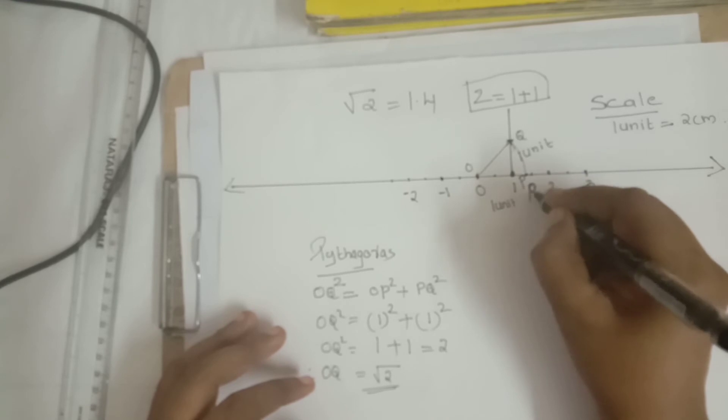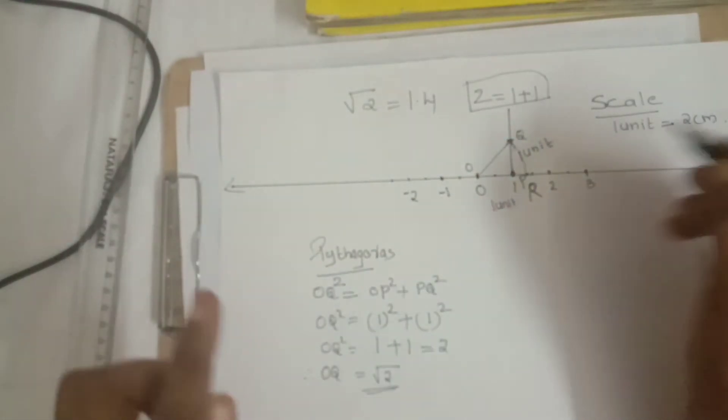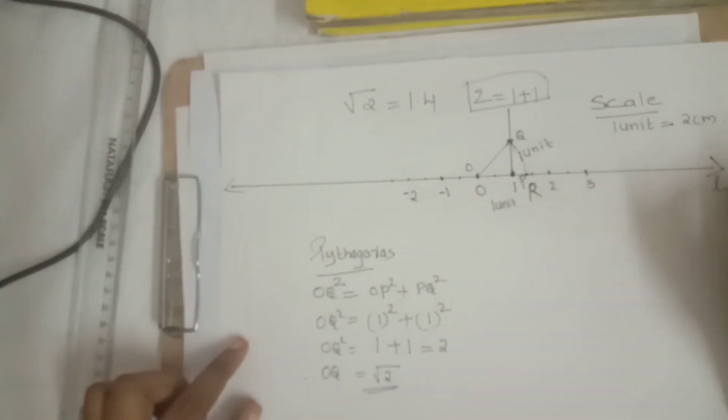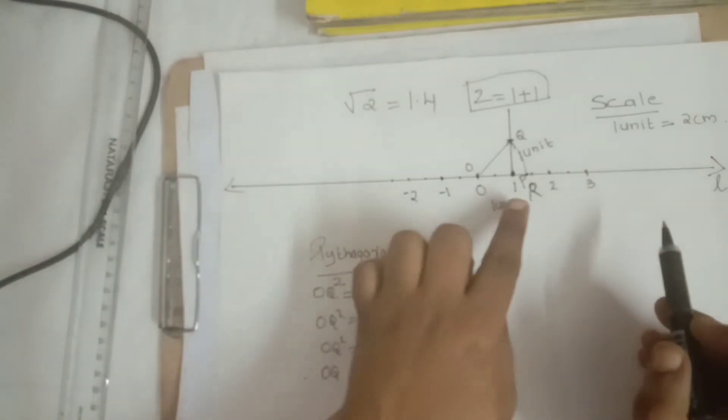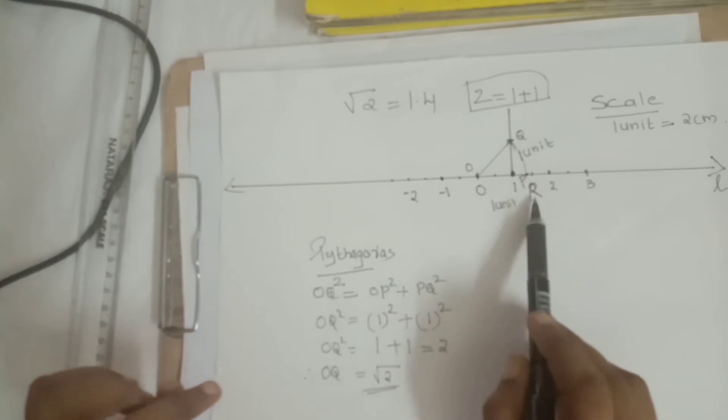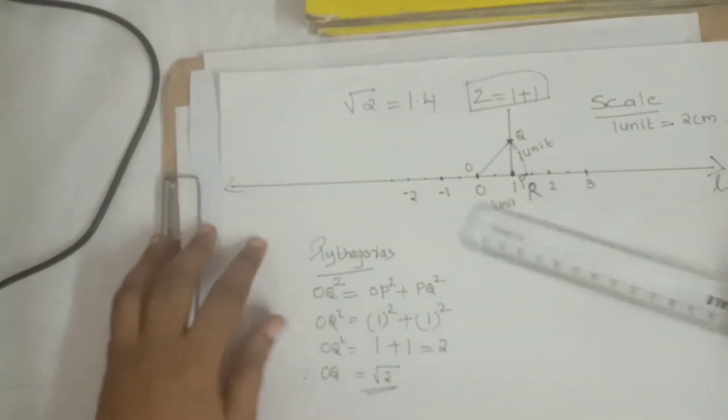The arc is cutting where? The cutting point, you mark with an alphabet R. That point, the arc cutting, cuts our number line. So we can give the number line the name L. Our number line L is cut by point R. Then measure it. What is the measurement? Is it 1.4 or not? Check it.